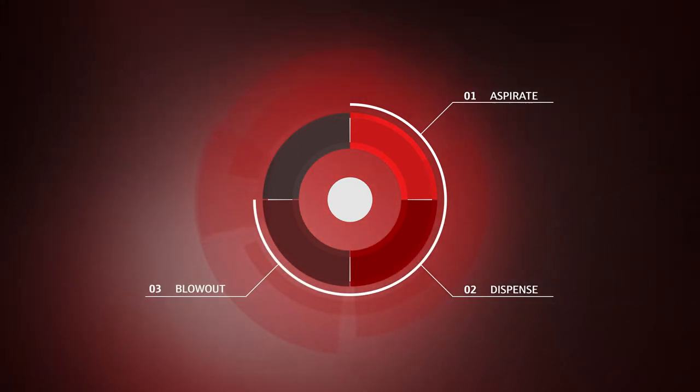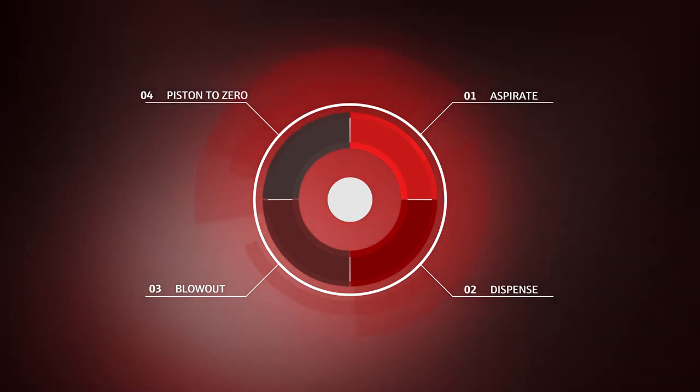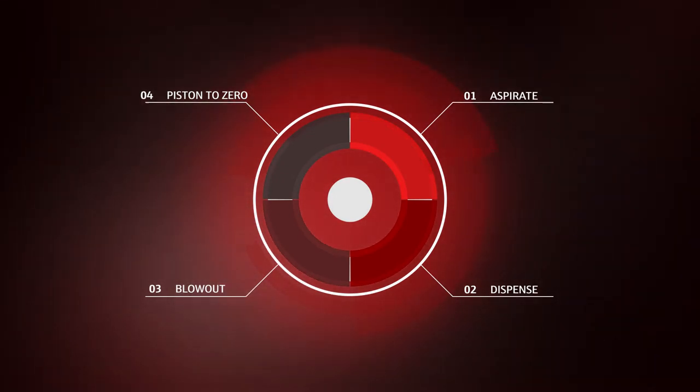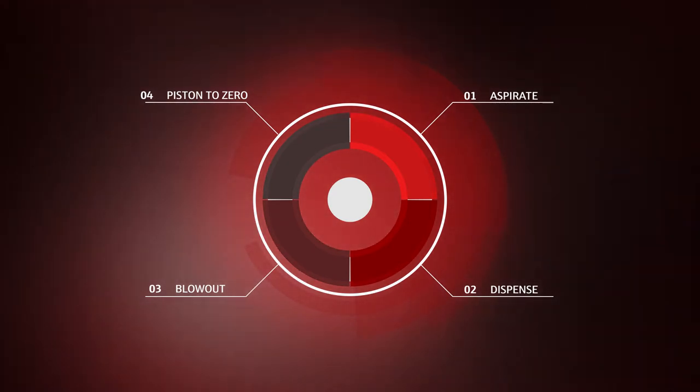The general piston cycle consists of four steps: aspirate, dispense, blowout, and move pistons to zero. When the piston cycle is completed, the piston is back in the starting position and ready for a new liquid transfer.